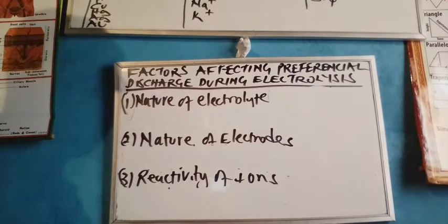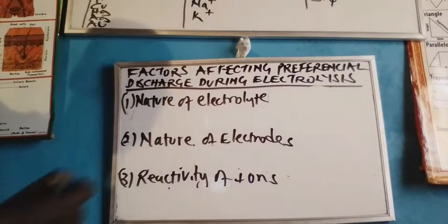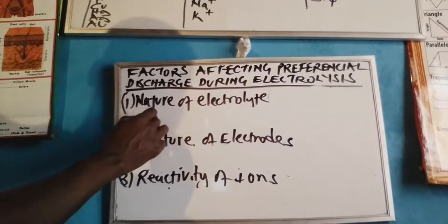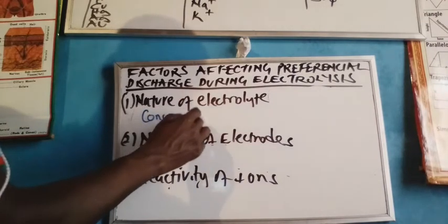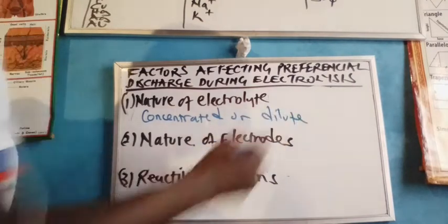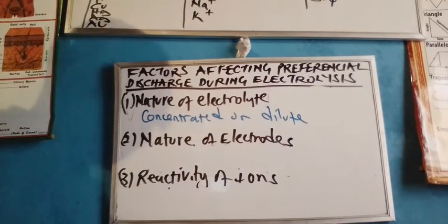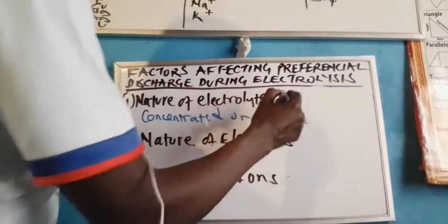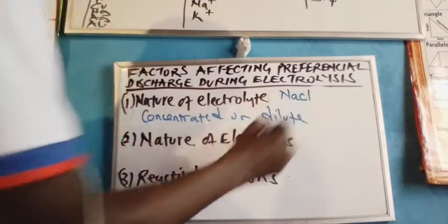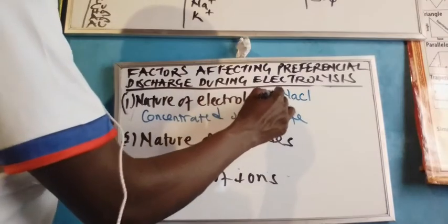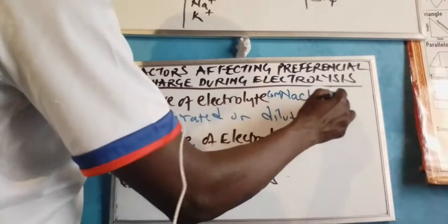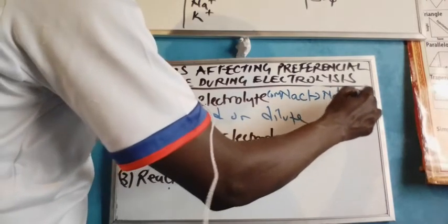To begin with, the nature of electrolyte shows that we have two forms of electrolyte, which are either concentrated or dilute. When the electrolyte is concentrated, the ions present — for example, in brine solution — we have concentrated sodium chloride. The only ions discharged in this process are sodium ions and chloride ions.